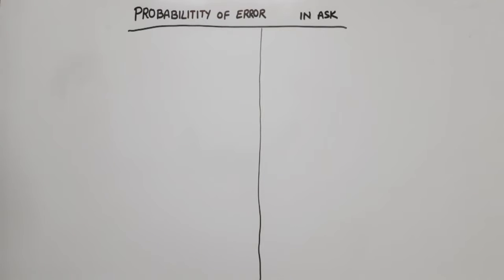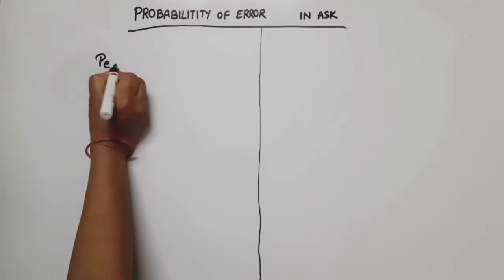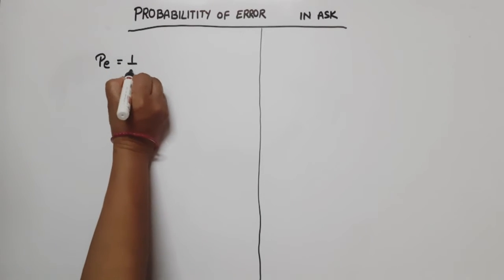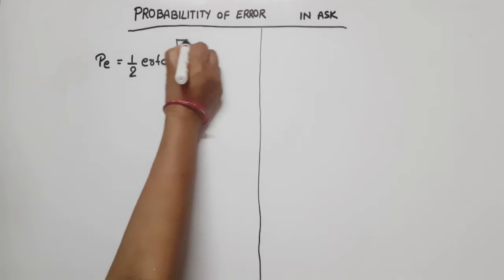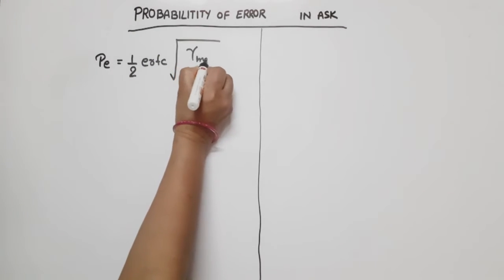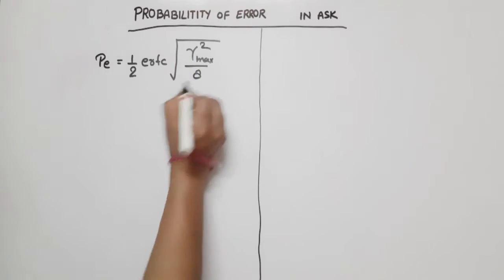In this video lecture on digital communication, I am going to calculate the probability of error in ASK — Amplitude Shift Keying. To start with the general equation which we found in the last lecture, the probability of error is given by one-half times the complementary error function of the square root of gamma-max squared divided by 8.